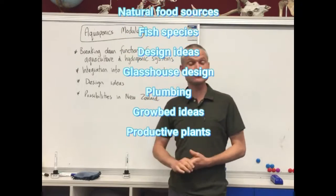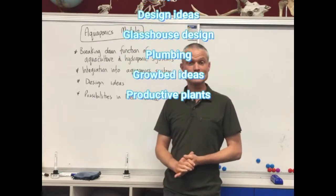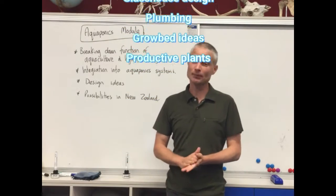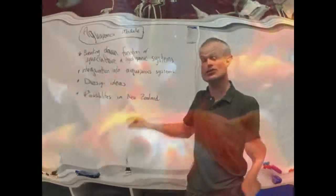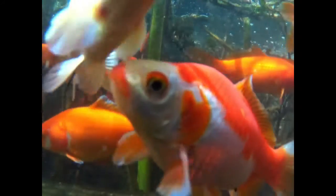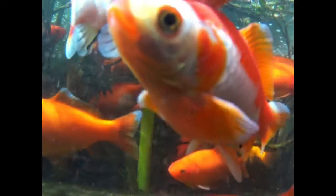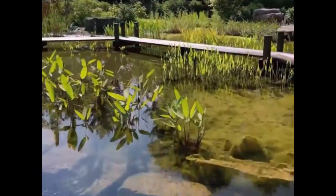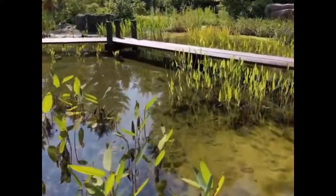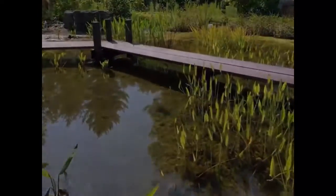Then we'll look at some different design ideas and what kind of possibilities there are, and in particular in the New Zealand context, some suitable plants and animal species that can be beneficially integrated together to create a nice aquaponics system.